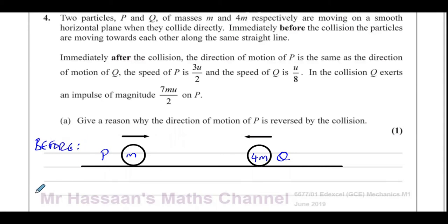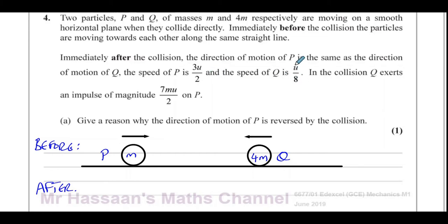Before, they're moving towards each other. After the collision, the motion of P is in the same direction as the motion of Q. They haven't mentioned which one has been reversed. The speed of P is 3U over 2 and the speed of Q is U over 8. The speed of P is greater than the speed of Q.